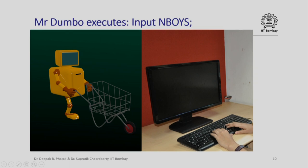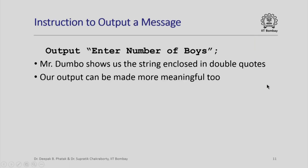We would like some indication, preferably an indication to appear on our screen which suggests that Mr. Dumbo is waiting for some input value. We then introduce another instruction — an instruction to output a message. For example, if we write 'output "enter number of boys"', this is a string of words enclosed in double quotes. This is almost like an output instruction, but instead of outputting the value of a named location, we are asking Mr. Dumbo to output just this string as is. What Mr. Dumbo does is he actually brings that string to us and shows that string on the monitor.